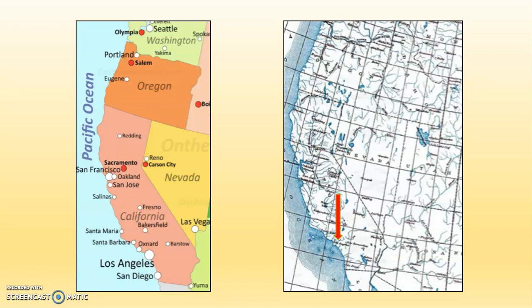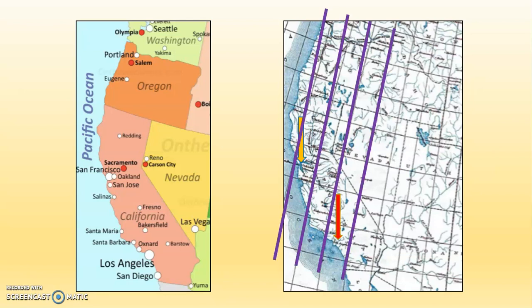That red arrow on the map on the right hand side is pointing at Los Angeles. The bronze arrow is pointing at San Francisco. These purple lines are lines of longitude. So you can see as we go further to the left, which is to the west, San Francisco is to the west of Los Angeles.